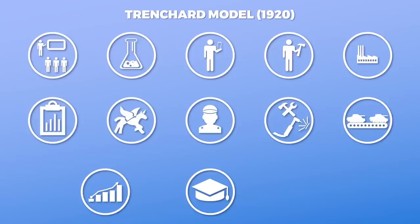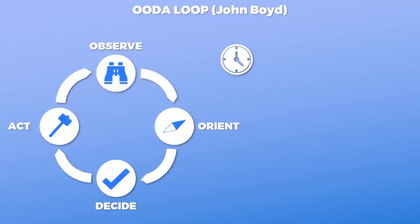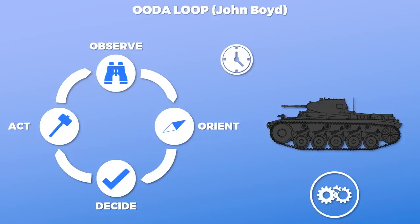The OODA loop by John Boyd is basically an abstraction of a combat operation process followed by actors in combat: first observe, then orient, then decide, and finally act. Whoever can perform this process faster might overwhelm the enemy, depending on the discrepancy. One of the best examples of this is the Battle of France, where the Wehrmacht repeatedly outplayed the French, who were just overwhelmed and paralyzed most of the time due to the operational speed.